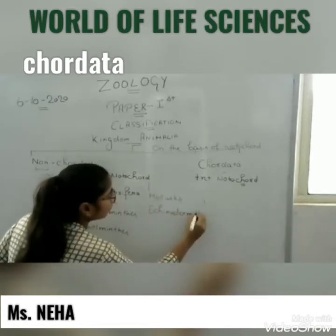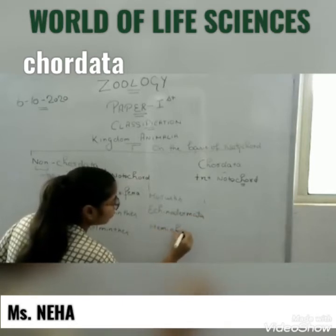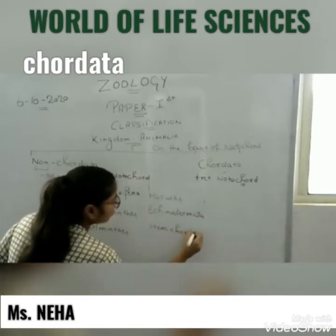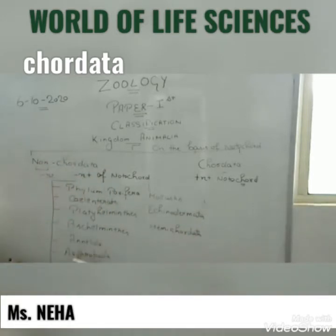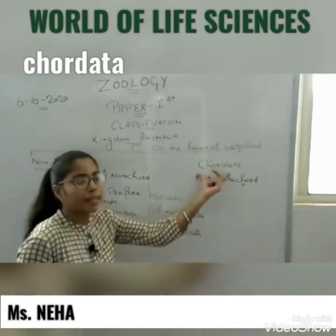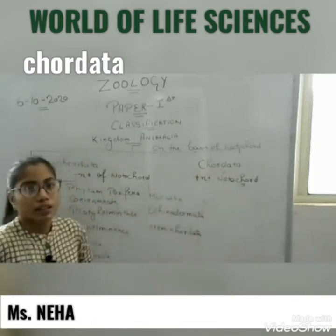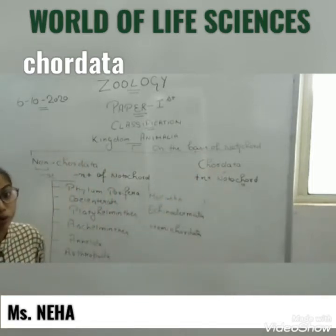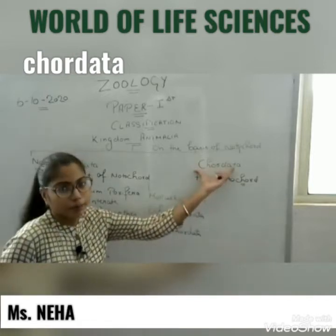Hemichordata means half-chordate. This is the phylum which is called the non-Chordates, but the Chordata phylum is classified into three sub-phyla.